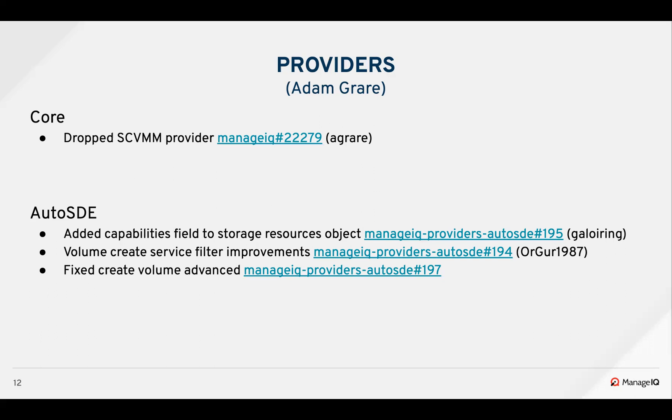That was a nice bug fix that fell out of shaking the tree a little bit. For AutoSD, GAL added capabilities to the storage resource objects so that they can track what is available as enabled and disabled features for the different storage objects. They also improved the volume create by filtering out properties that aren't able to be selected. And once a volume was created, they fixed a bug where gathering the IDs for targeted refresh wasn't pulling the IDs from the proper location, so it wasn't finding anything.